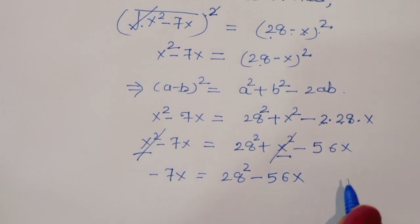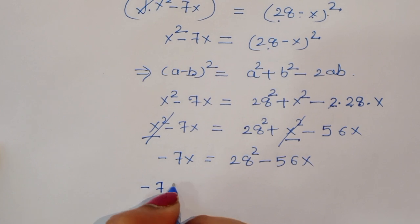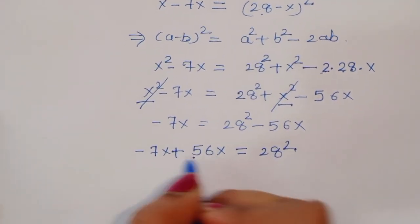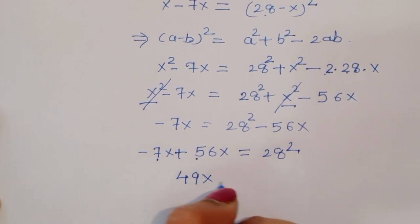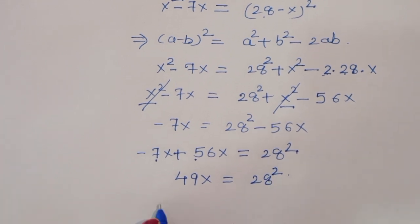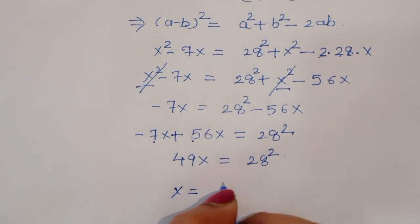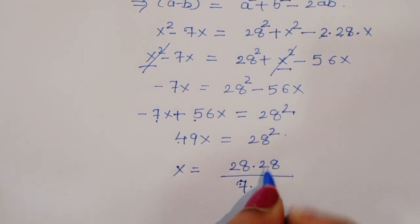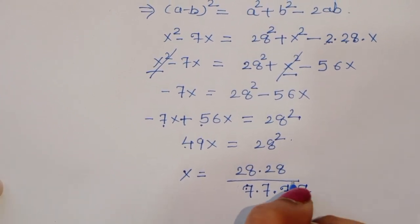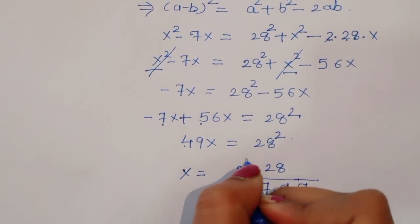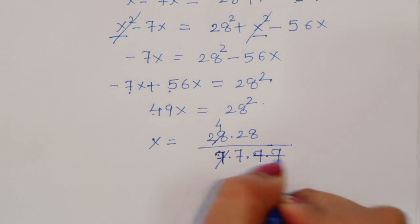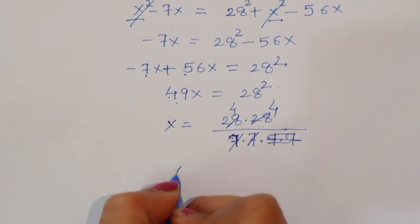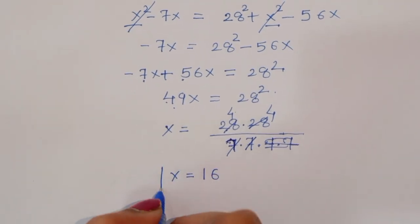After canceling x squared, we get minus 7x is equal to 28 squared minus 56x. Rearranging: minus 7x plus 56x is equal to 28 squared, so 49x is equal to 28 squared. Therefore x is equal to 28 times 28 divided by 49, which simplifies to x is equal to 16.